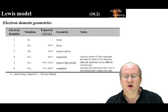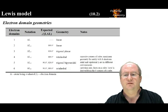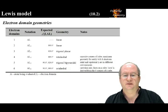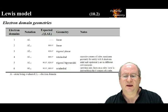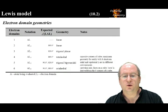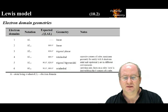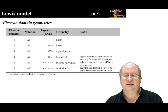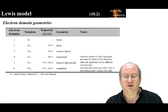With three electron domains, the geometry is trigonal planar, with a bond angle of 120 degrees. With up to three electron domains, the geometry is flat — it exists in 2D. With four or more electron domains, the geometry extends into three dimensions. With four electron domains, the geometry is tetrahedral. It is possible to show that the bond angle is 109.5 degrees.